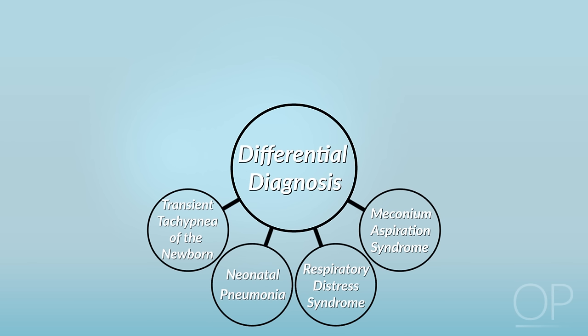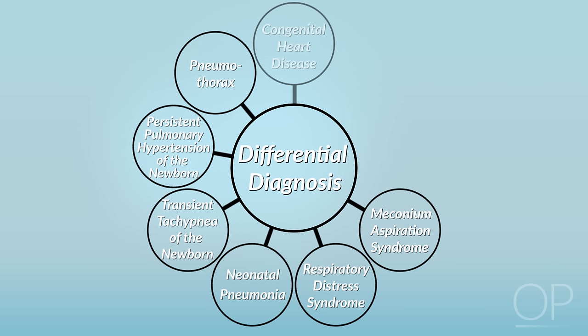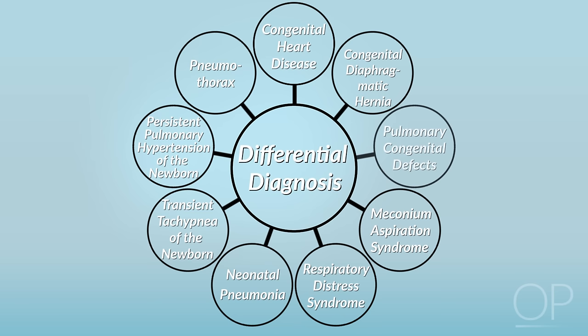Other less common etiologies of newborn respiratory distress include persistent pulmonary hypertension of the newborn, pneumothorax, congenital heart disease, congenital diaphragmatic hernias, and pulmonary congenital defects.